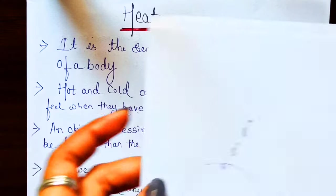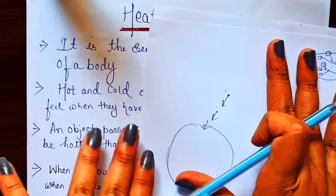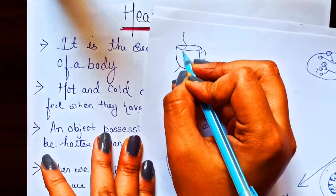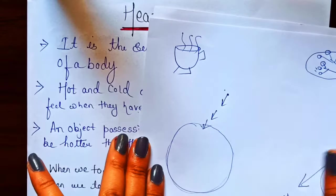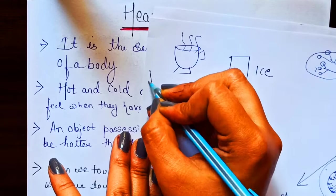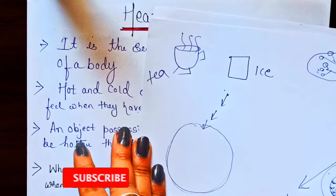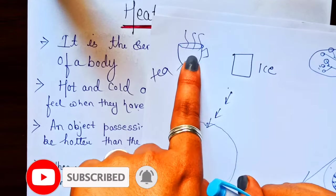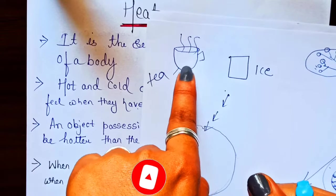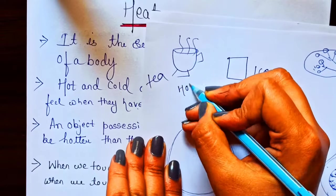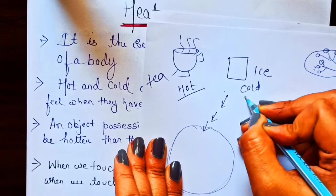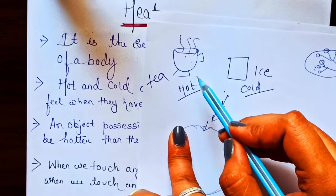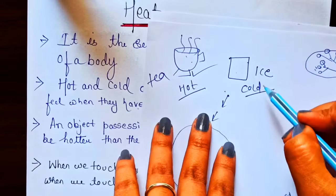Suppose you have two things: one is a very hot cup of tea, and the second is ice. If I ask you to touch these two objects — if you touch the tea you will say it's hot, and if you touch the ice you will use the word cold.